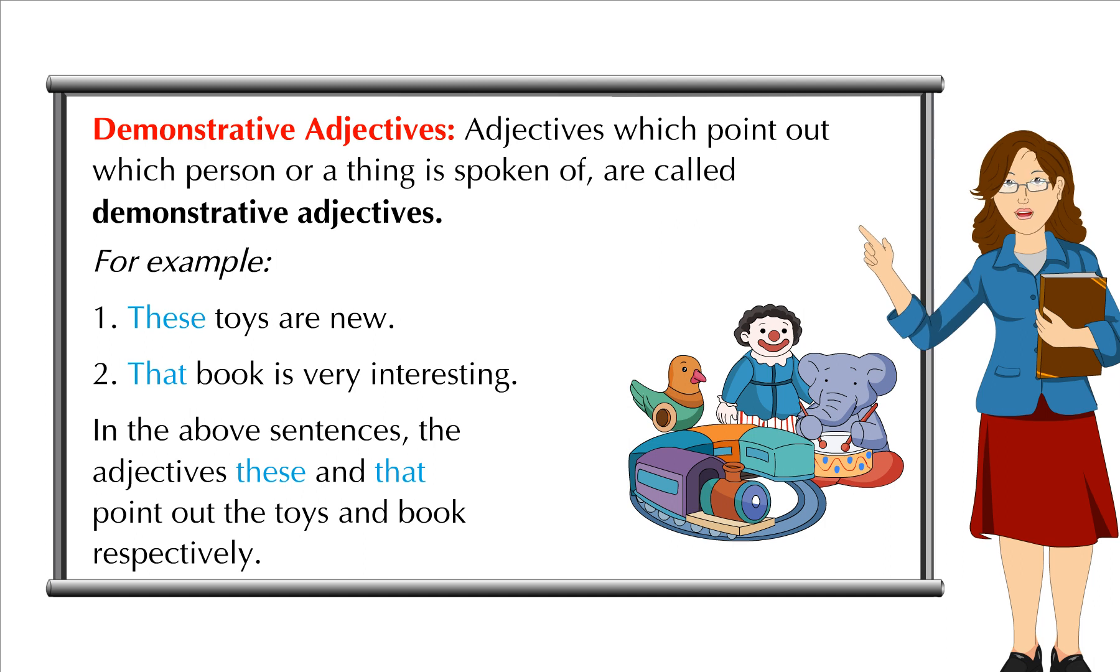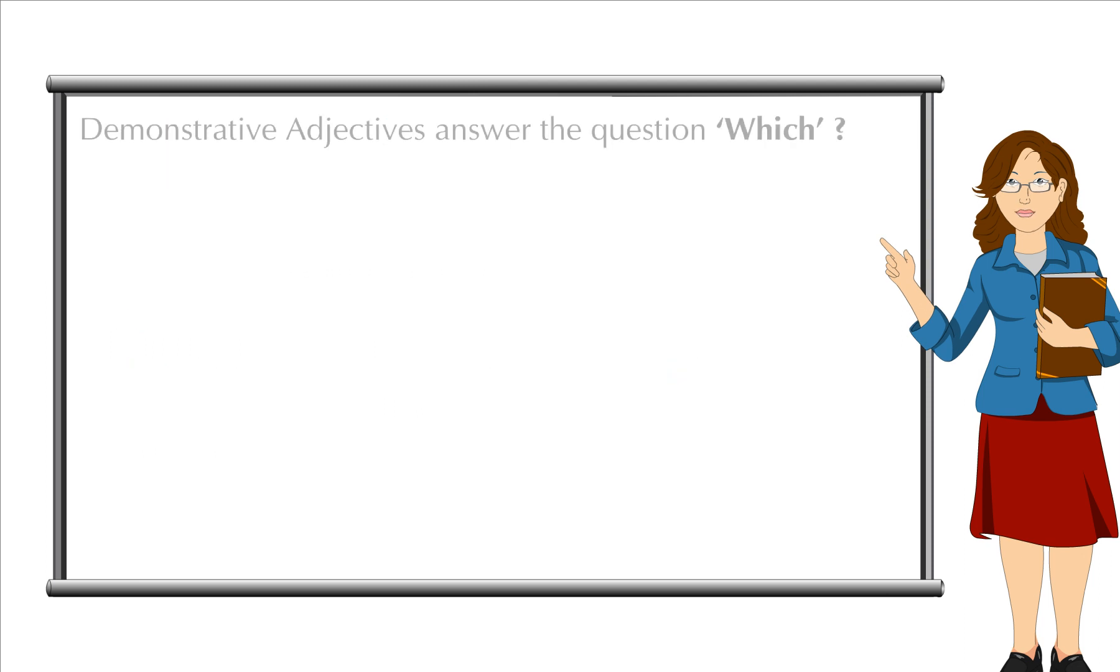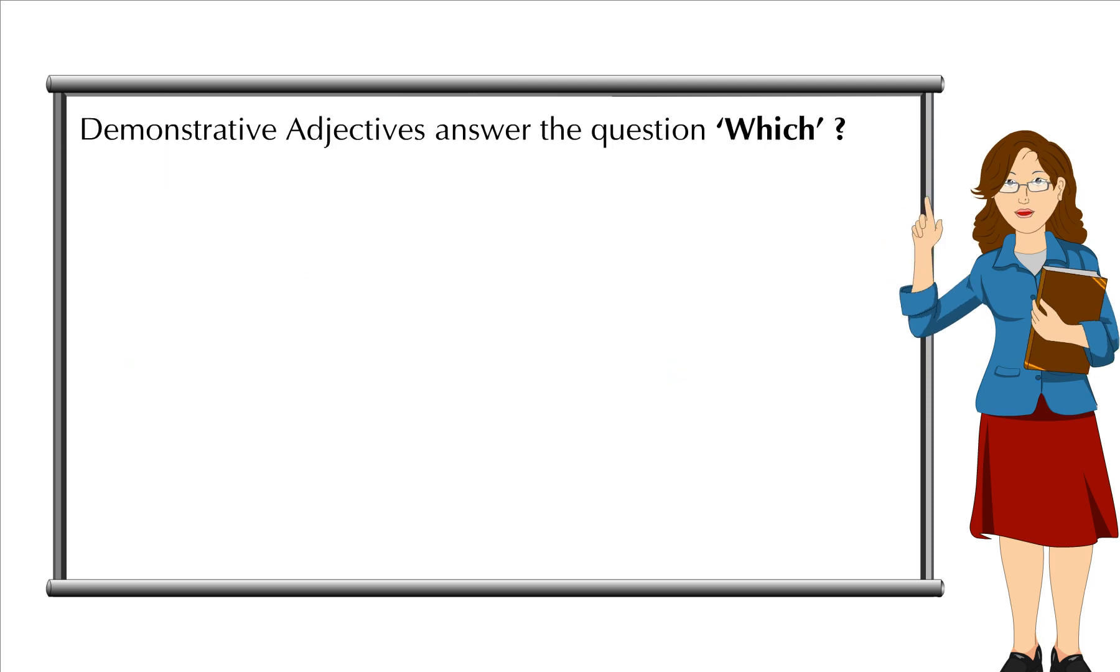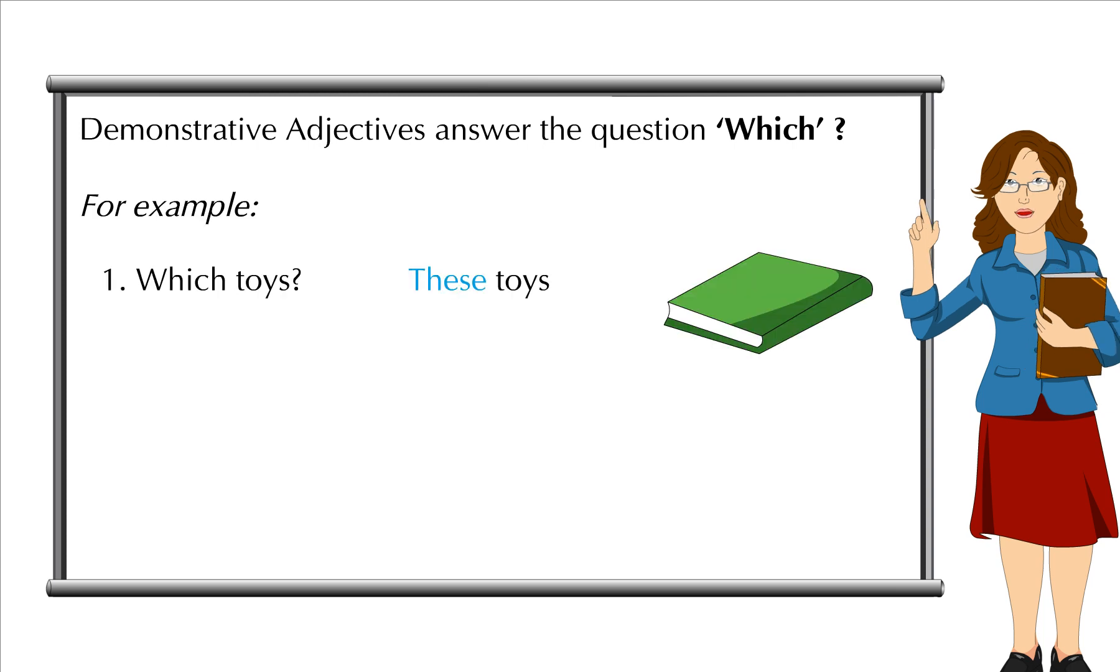In the above sentences, the adjectives these and that point out the toys and book respectively. Demonstrative Adjectives answer the question which. For example, Which toys? These toys. Which book? That book.